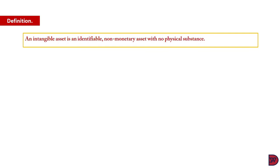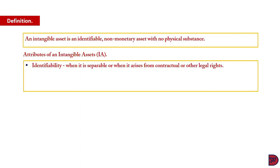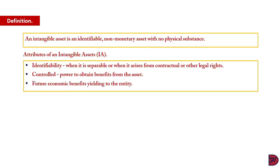Let's first talk about the definition of an intangible asset. An intangible asset is an identifiable non-monetary asset with no physical substance. So it has three attributes. First, identifiability — it means the item must be separable. When an item is separable, it means that it can be sold, transferred, or licensed on its own, or it arises from contractual or other legal rights. The second one is controlled, meaning the entity has the power to benefit from the asset. The last one is that the asset must have the potential of yielding future economic benefit to the entity.